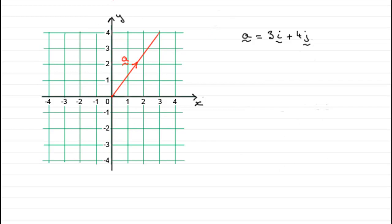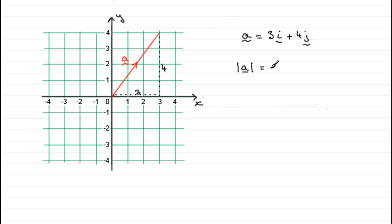When it comes to finding the length of this vector, I can use Pythagoras' theorem. I can think of a right-angled triangle around here where the length of this side is 3, and the length of this side is 4 units. So using Pythagoras' theorem, the length of the vector a — the modulus as we often say — given by this symbol here, is going to be equal to the square root of the sum of the squares of the components. In this case, 3 squared plus 4 squared, which comes to the square root of 9 plus 16, the square root of 25, which is 5.